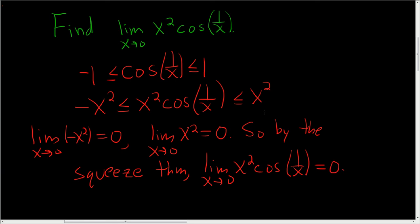Again, the squeeze theorem says that if you have a function that's trapped between two other functions—in this case negative x squared and x squared—and negative x squared has a limit (in this case 0), and x squared has a limit (also 0), then this function, which is trapped between these two, must also have the same limit, which is 0.